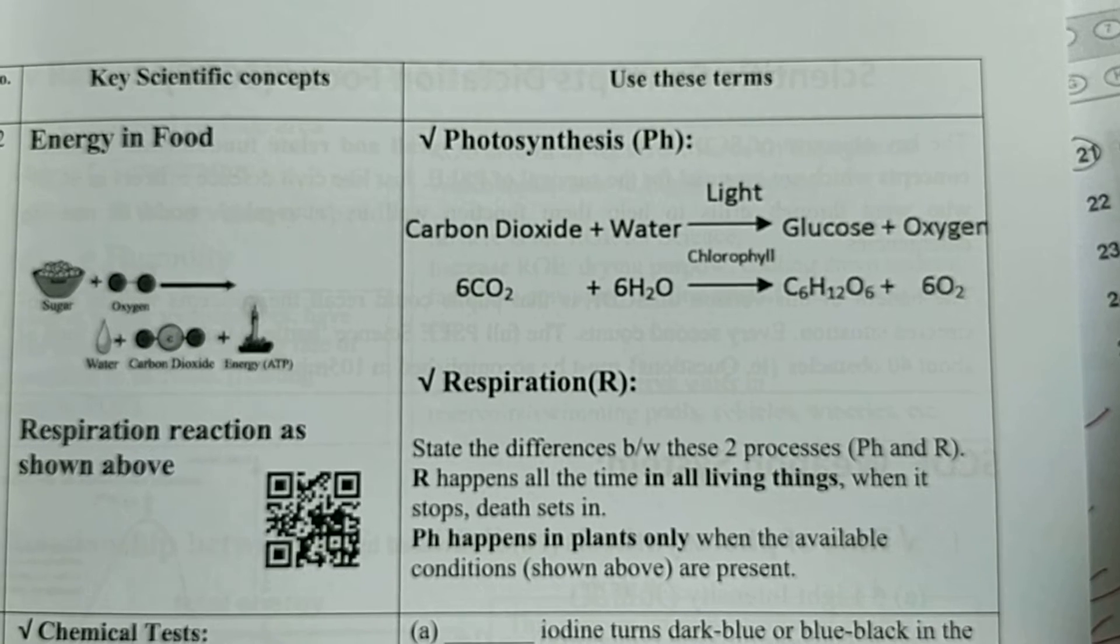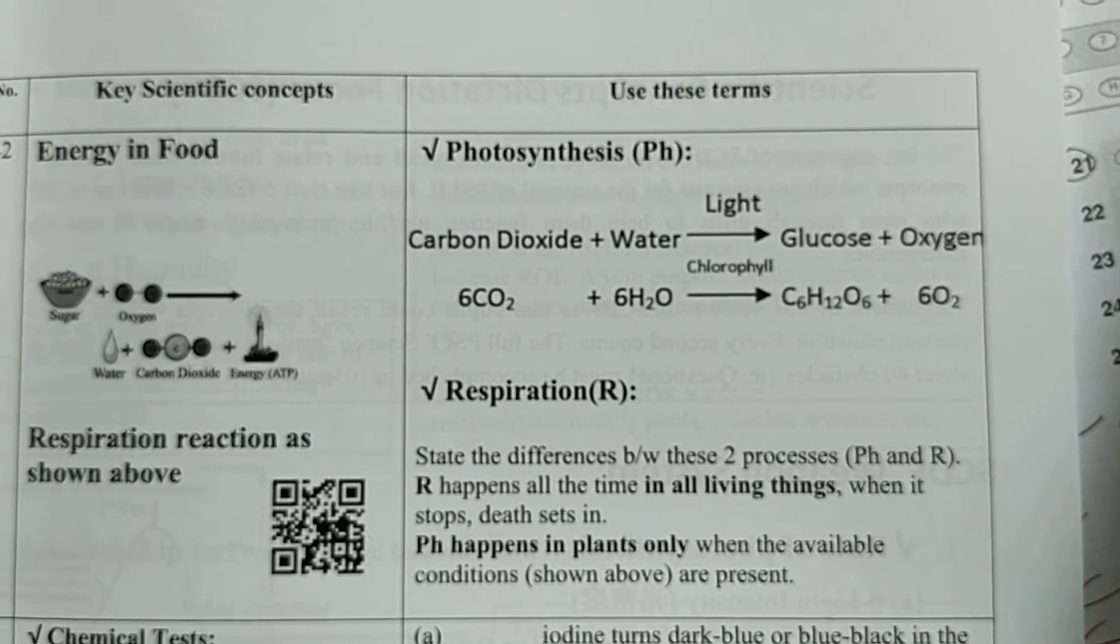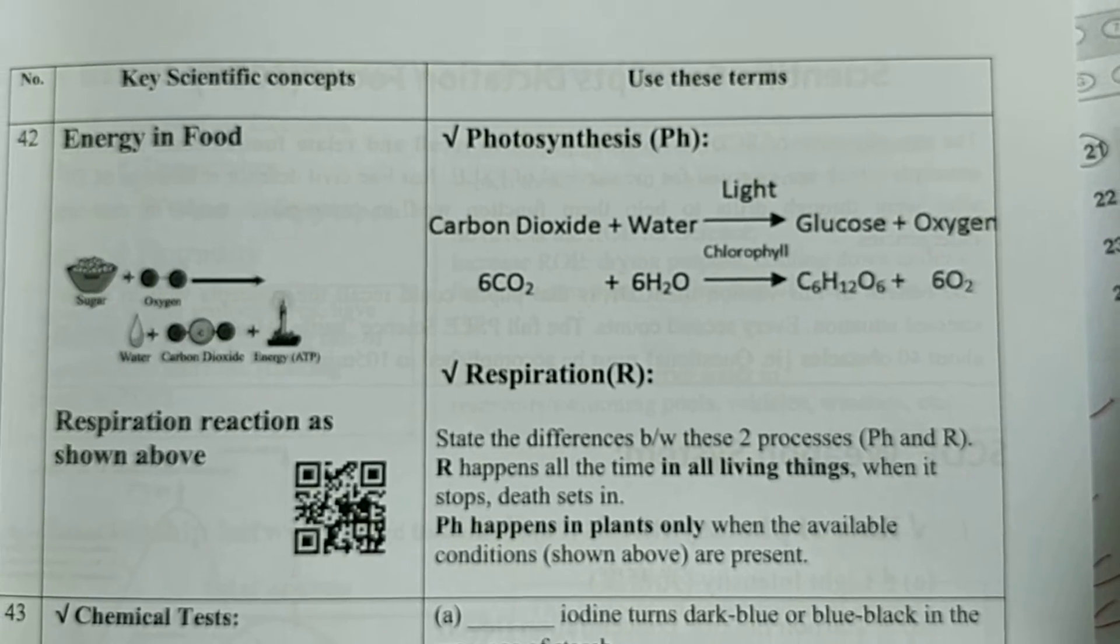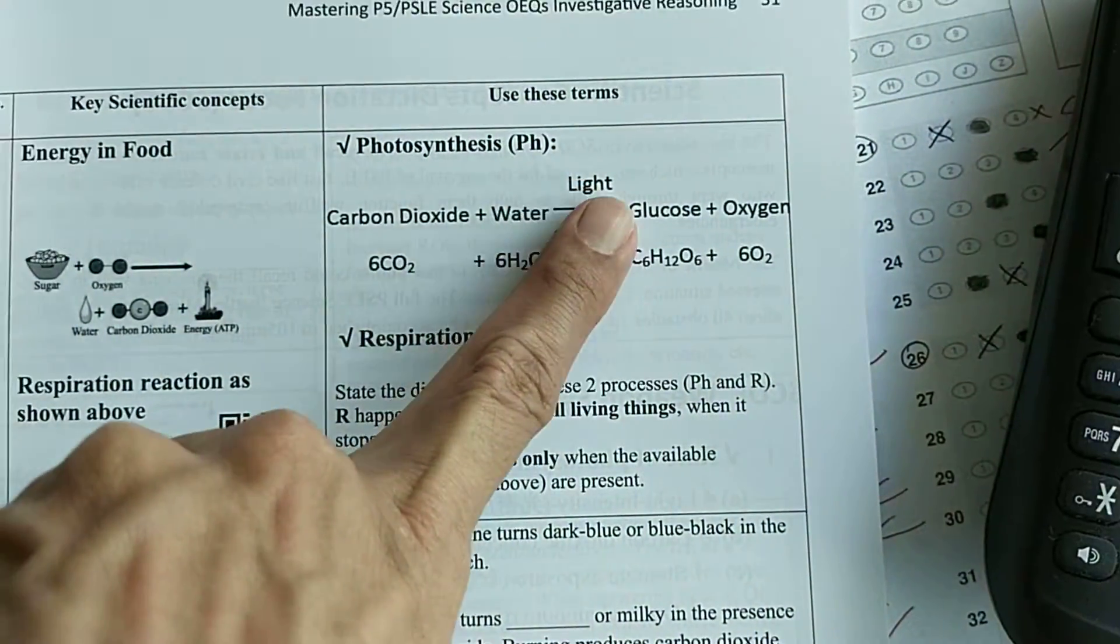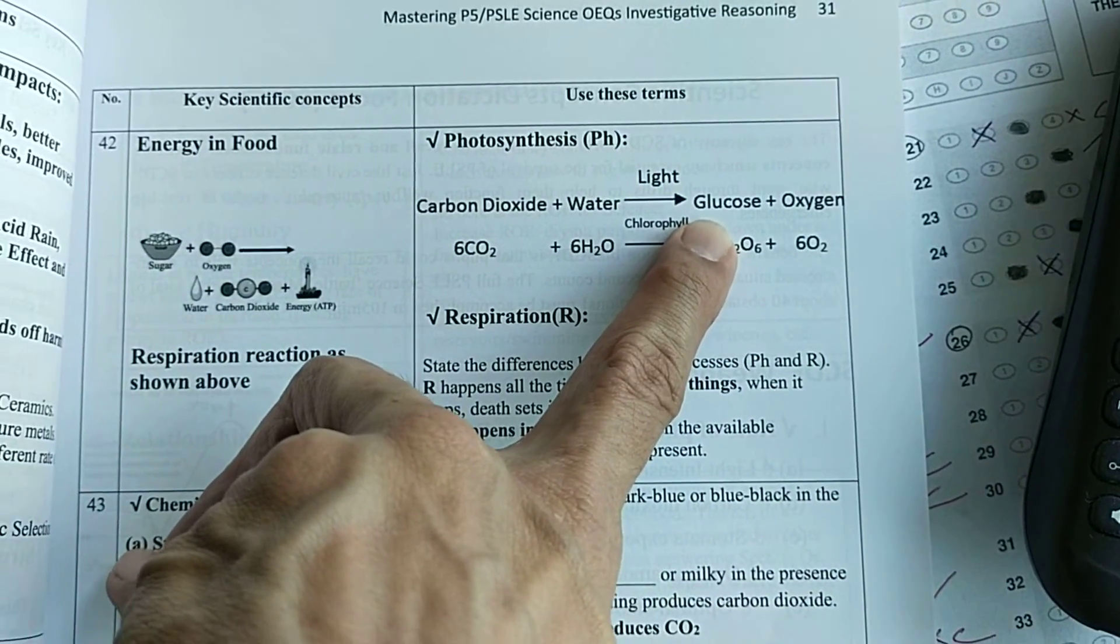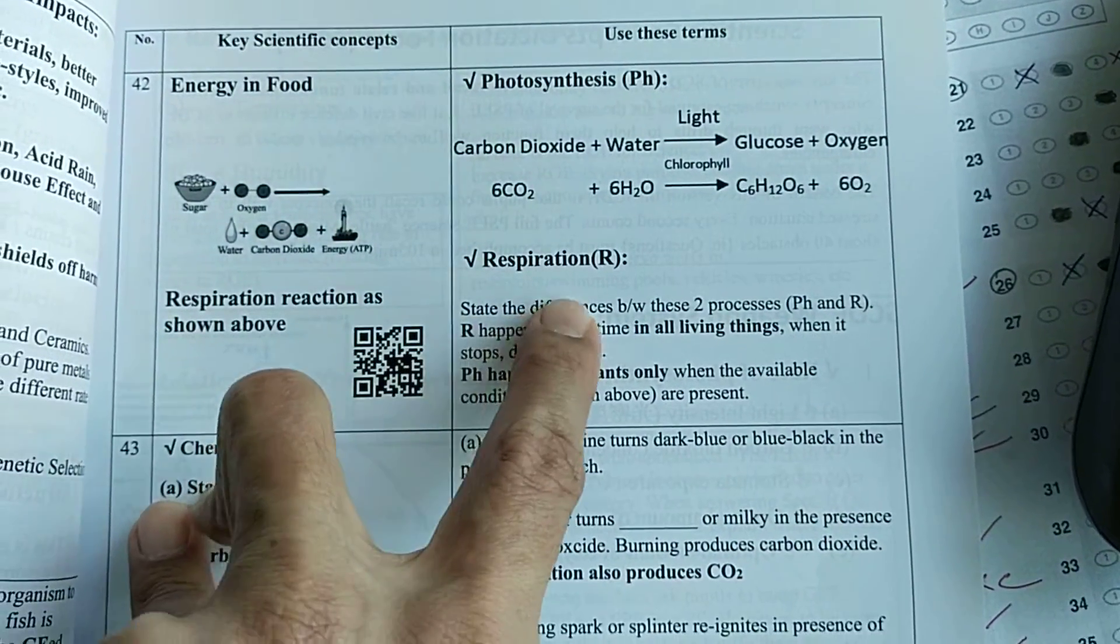As you can see here, photosynthesis - this is the word equation: carbon dioxide plus water in the presence of light and chlorophyll produces glucose and oxygen. Glucose is also called sugar or food.